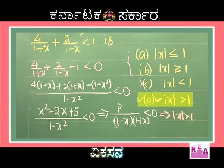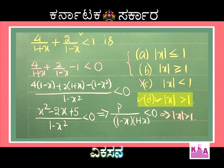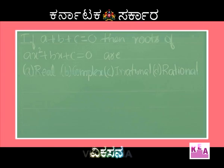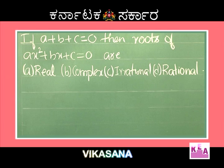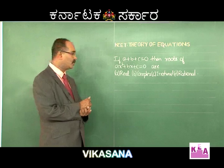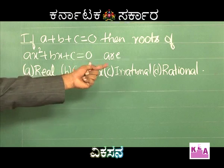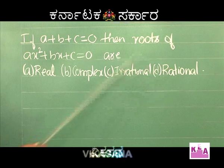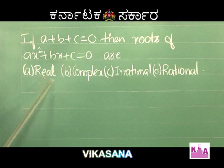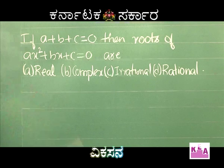Next problem: if a + b + c = 0, then the roots of ax² + bx + c = 0 are — Option A: real, Option B: complex, Option C: irrational, Option D: rational. Note that irrational and rational roots are subsets of real roots, so you need to find the most precise answer. If a + b + c = 0, look at the equation ax² + bx + c = 0.